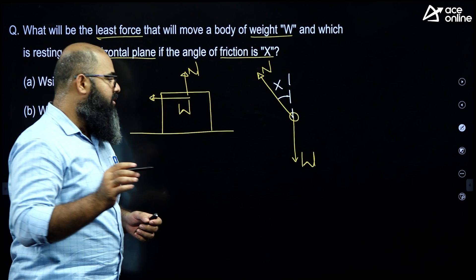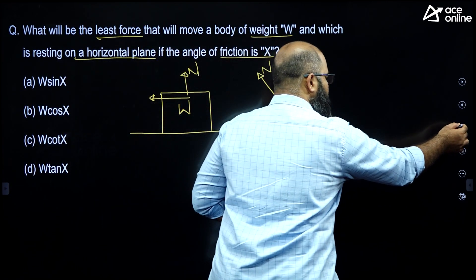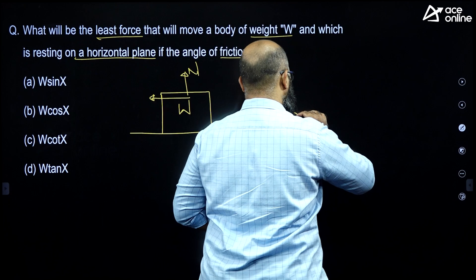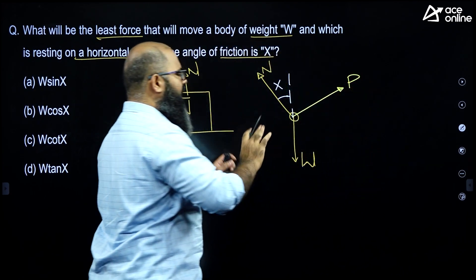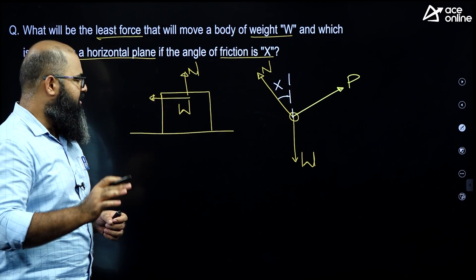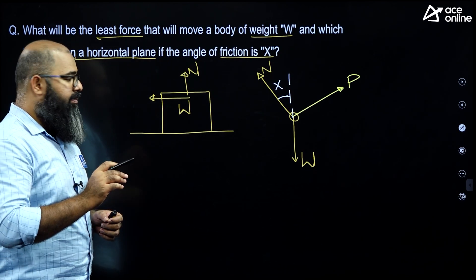Now, I wish to find out the force. Let us consider a force at any random angle. Let us say the force is some force P. P is at some random angle. P is at some random angle over here, but P has to be minimum.